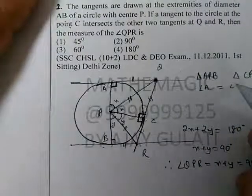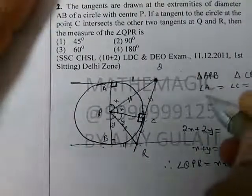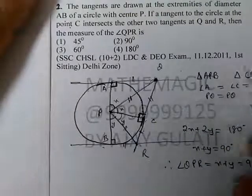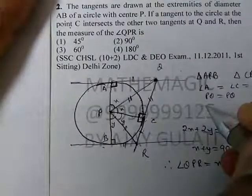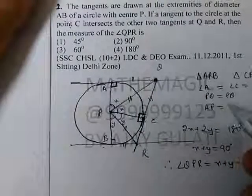Angle A is equal to angle C is equal to 90 degrees. PQ is equal to PQ. Then AP is equal to CP.